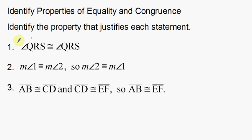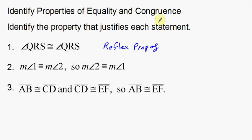First example: angle QRS is congruent to angle QRS. That tells me right away it's the reflexive property — reflexive says an angle is congruent to itself. Now, reflexive property of what — equality or congruency? I see a congruency symbol, so this is the reflexive property of congruence. Part of this is correctly identifying both the property and whether it's equality or congruency.